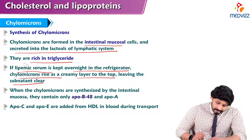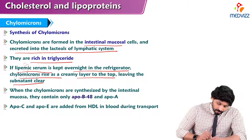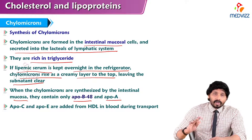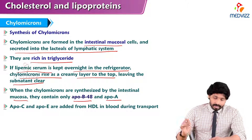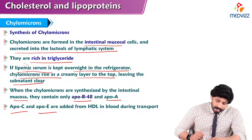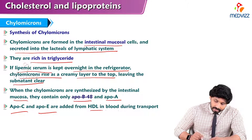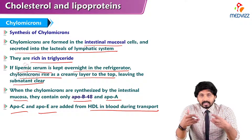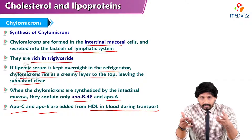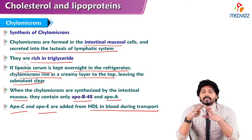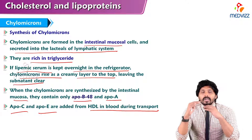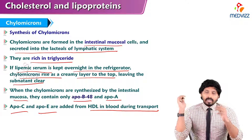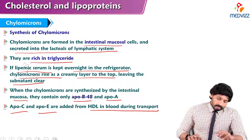When chylomicrons are synthesized by the intestinal mucosa, they contain only ApoB48 and ApoA. ApoC2 and ApoE are added from HDL in the blood during transportation. So when chylomicron is first synthesized, only ApoB48 and ApoA are present. When it reaches the circulation from the intestine, ApoC2 and ApoE are added from HDL during transportation.